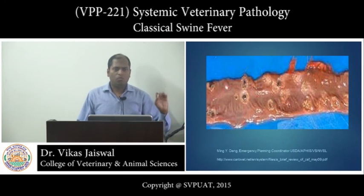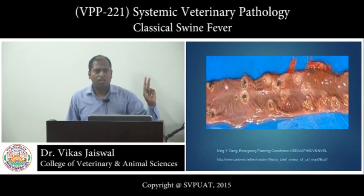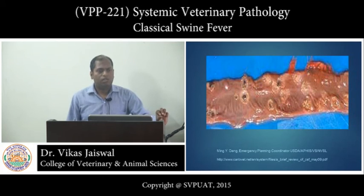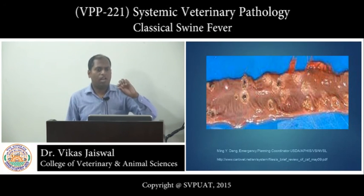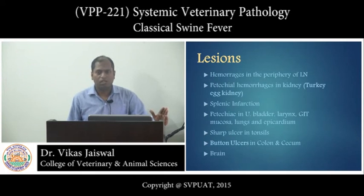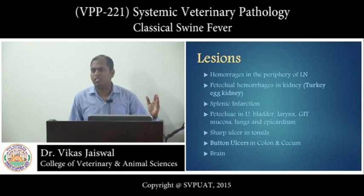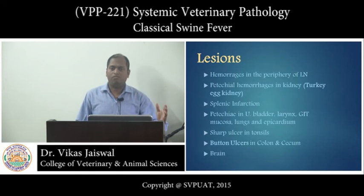To repeat the key peculiar points to remember: number one, turkey egg kidney appearance; number two, button ulcers; number three, petechial hemorrhages; and most important, lymph node hemorrhages which are peripheral only. When intrauterine infection takes place, it leads to abortion, stillbirth, mummification, and various fetal abnormalities.